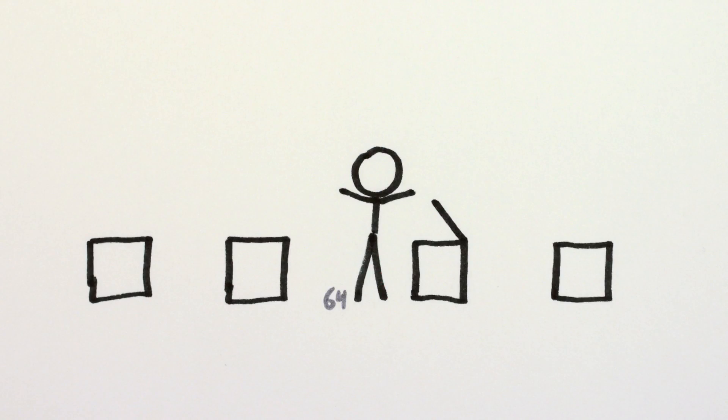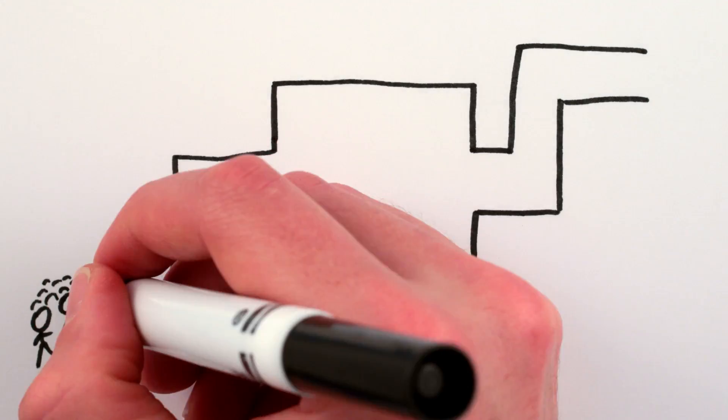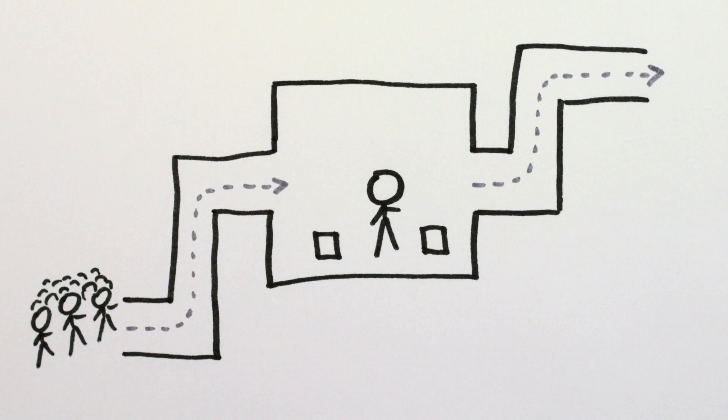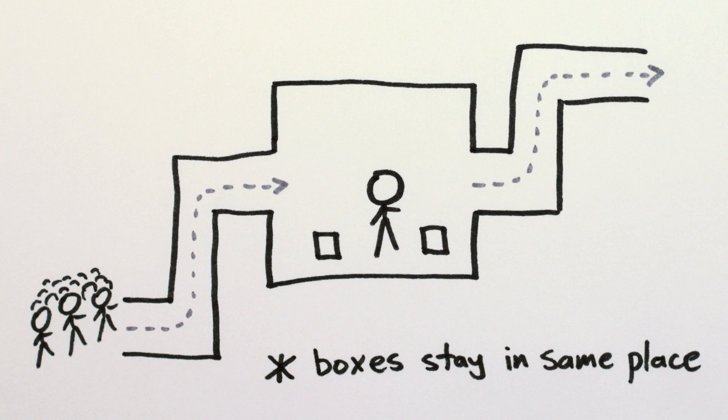If you find the bill with your number on it, great, show me that you've succeeded and then leave the bill in its box. And regardless of whether or not you find your bill, you have to leave the room by a different route so you can't tell anyone else what you've seen, and the room is then reset before the next person comes in.